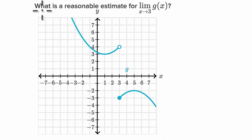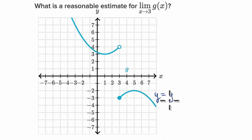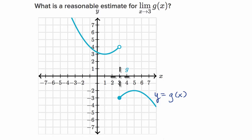We are asked: what is a reasonable estimate for the limit of g of x as x approaches three? What we have here in blue is the graph of y equals g of x, and we want to think about what is the limit as x approaches three. This is x equals three here.